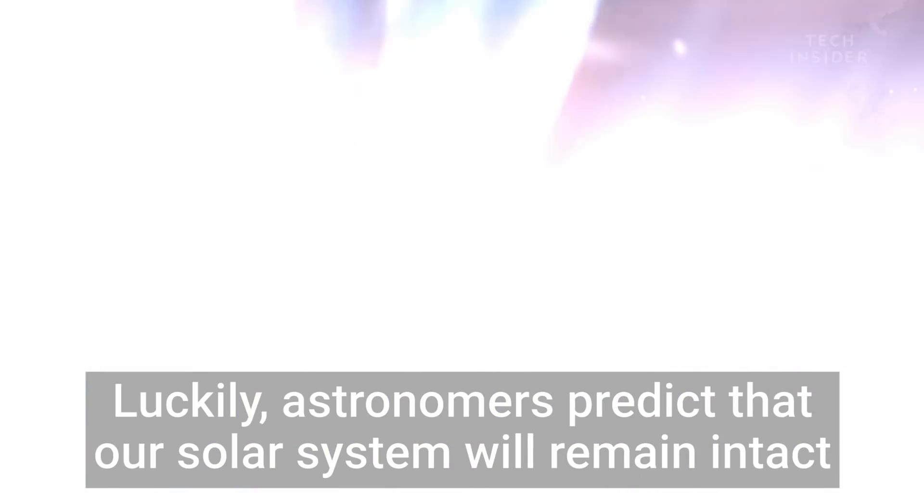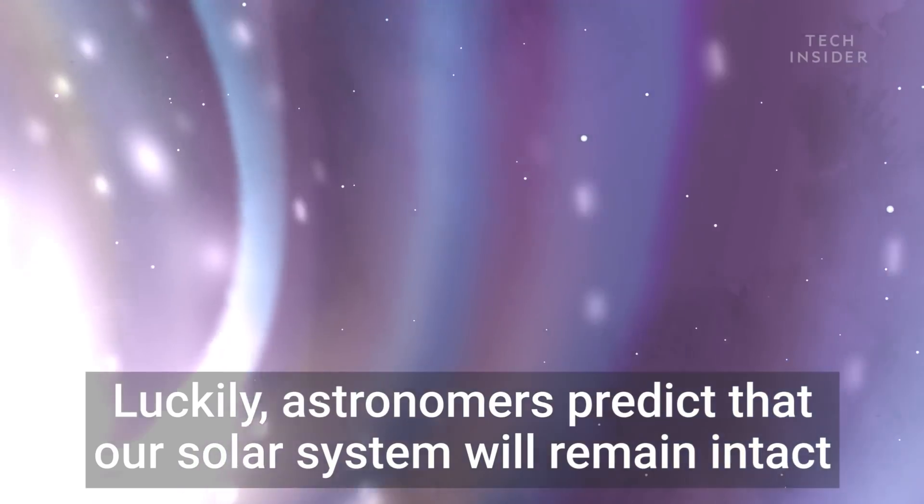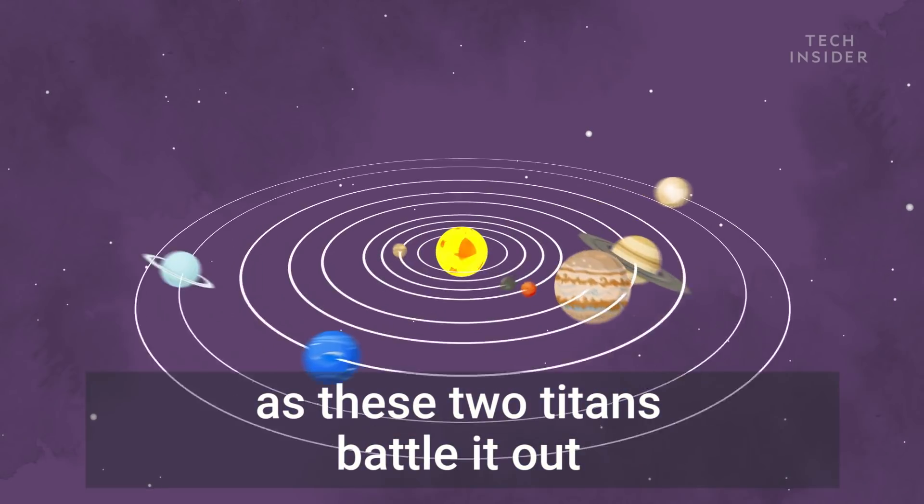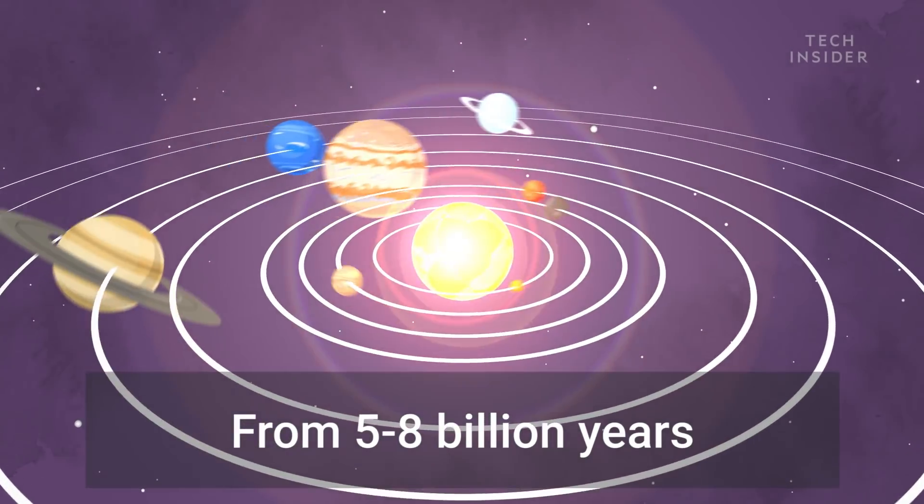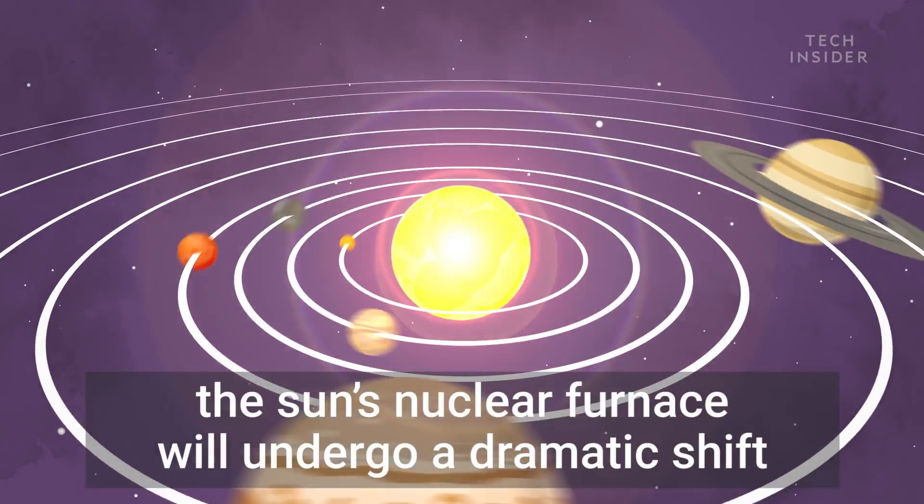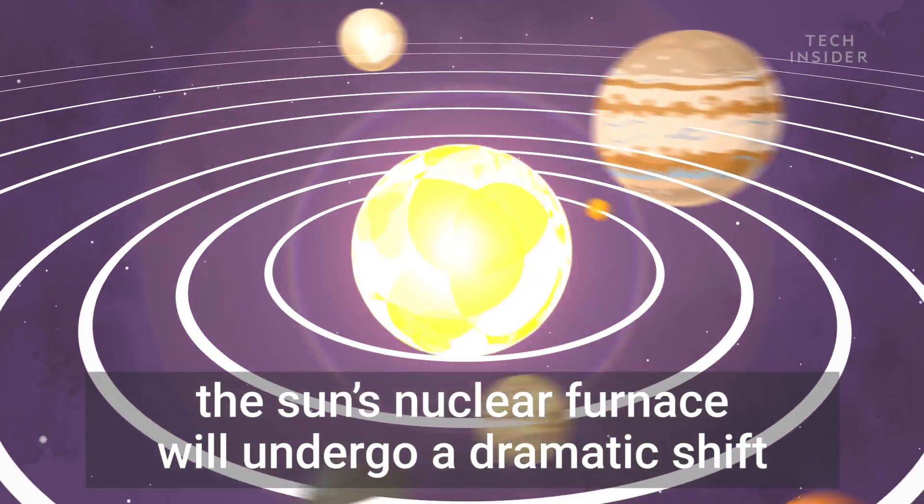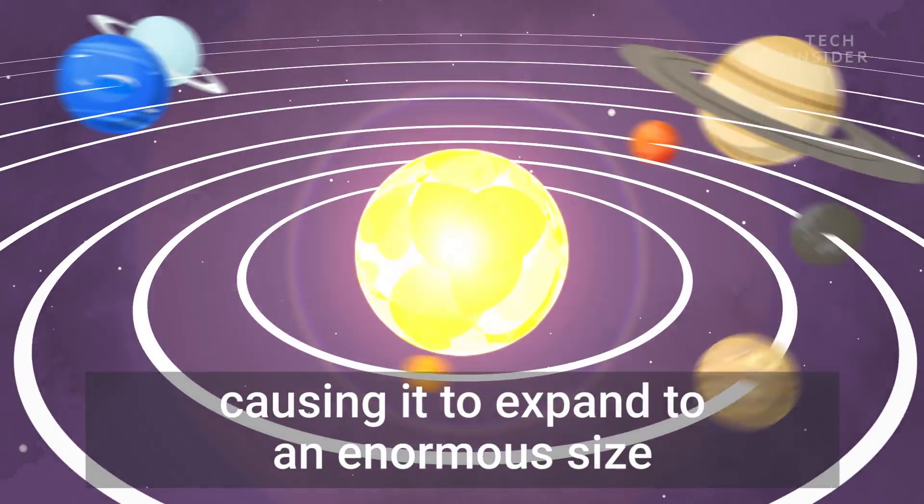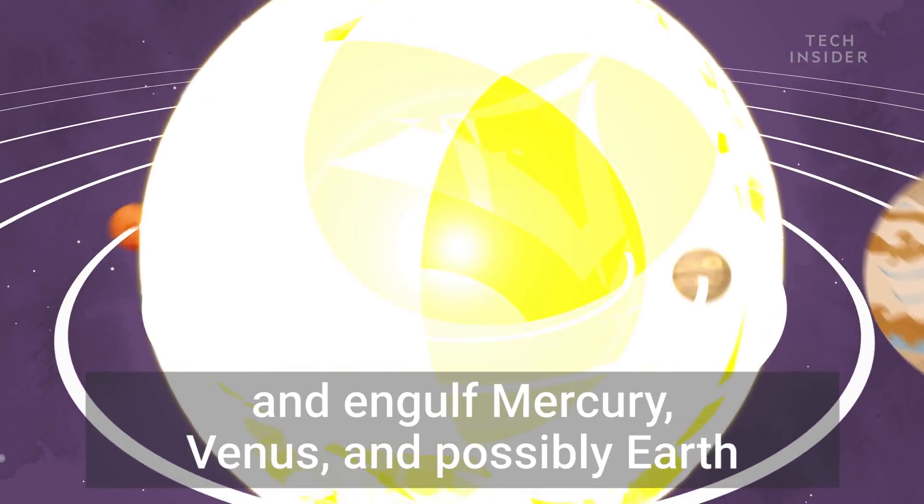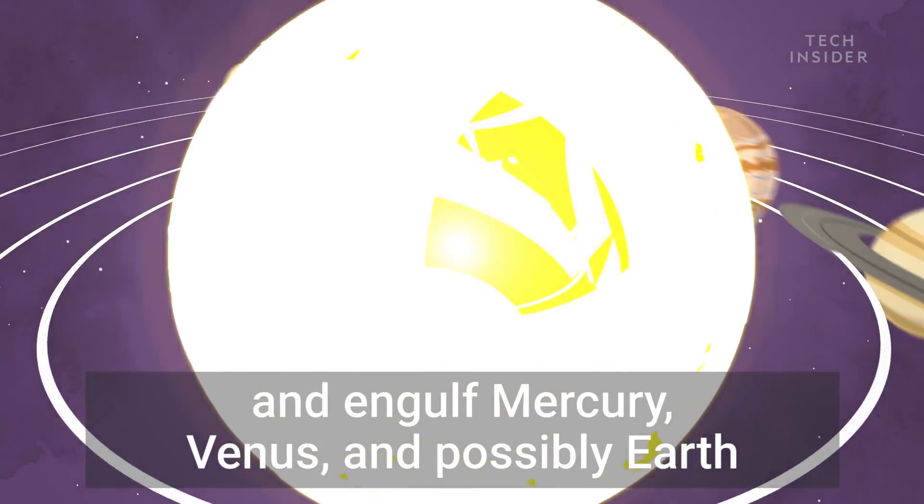Luckily, astronomers predict that our solar system will remain intact as these two titans battle it out. From five to eight billion years, the sun's nuclear furnace will undergo a dramatic shift, causing it to expand to an enormous size and engulf Mercury, Venus, and possibly Earth.